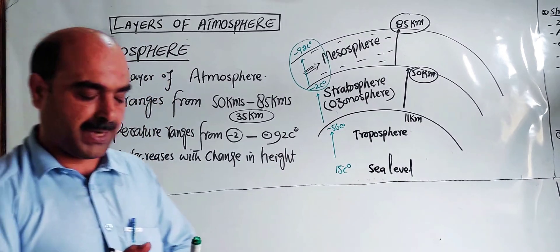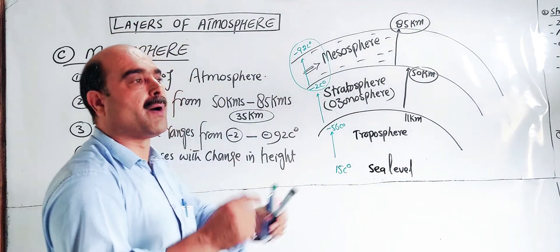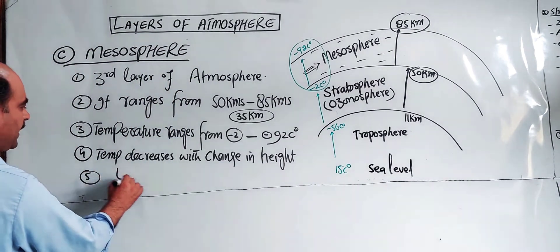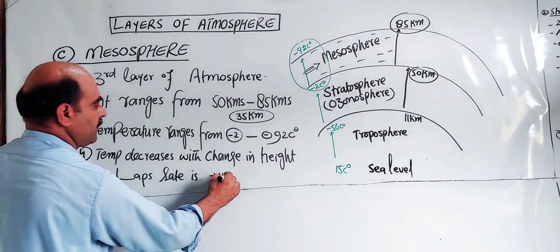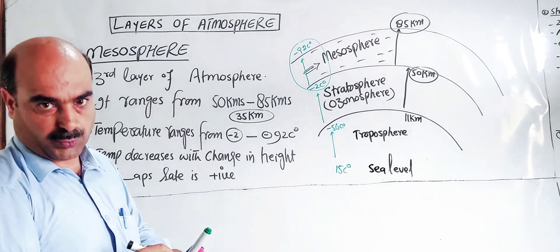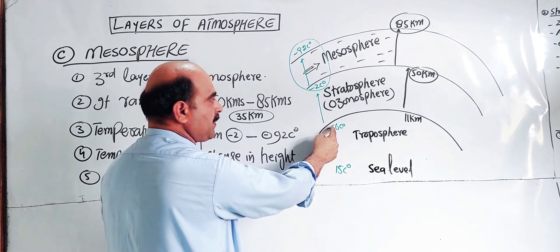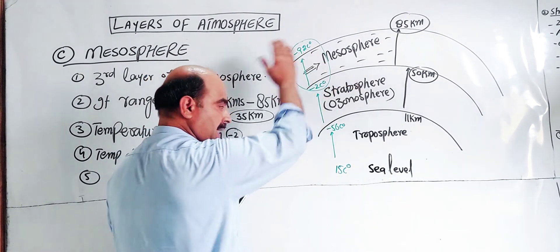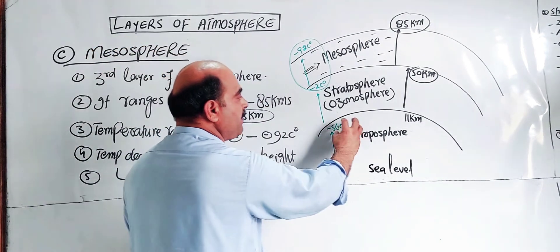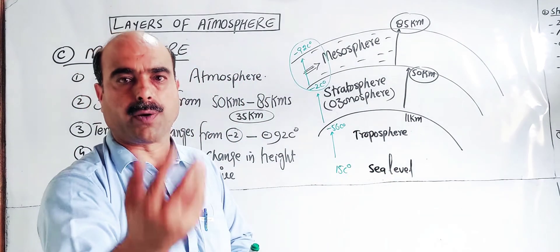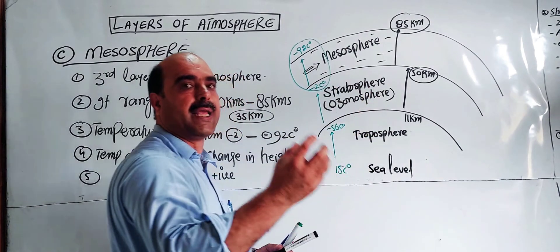The change in temperature with change in height is called the lapse rate. In the mesosphere, the lapse rate is positive, meaning temperature decreases with altitude. The average decrease in temperature is calculated from the values: starting at minus 2 degrees at the lower boundary.